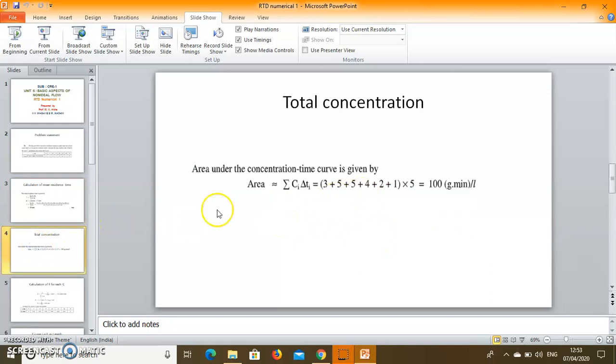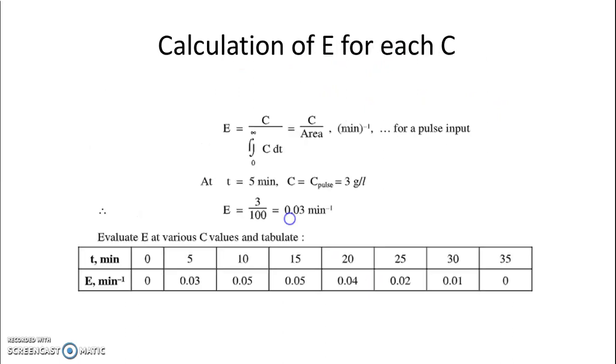So now calculation of E. Now this exit age distribution is corresponding to all the values of T. So E is Ci upon integration of C dt. That is total concentration, individual concentration divided by total concentration.